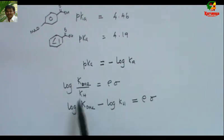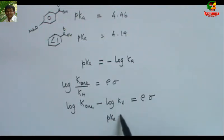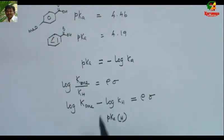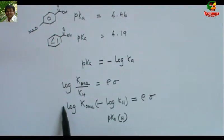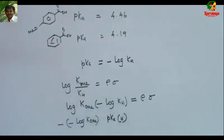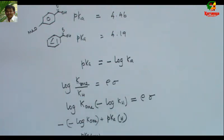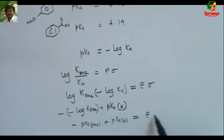So log(k_OMe / k_H) becomes: log(k_H) can be considered as the pKa of H, which corresponds to benzoic acid. Since minus log(Ka) = pKa, but here we have a plus sign, so minus into minus log(k_OMe) gives us pKa of OMe. Therefore: minus pKa(OMe) plus pKa(H) = sigma × rho.